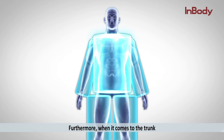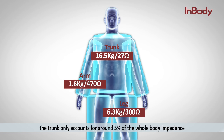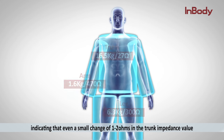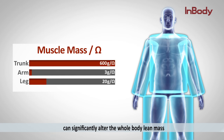Furthermore, when it comes to the trunk, its short and wide cylindrical shape yields a very low impedance value. The trunk only accounts for around five percent of the whole body impedance, yet it is responsible for about 50 percent of the whole body mass. This indicates that even a small change of one to two ohms in the trunk impedance value can significantly alter the whole body lean mass measurement.